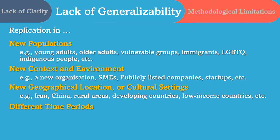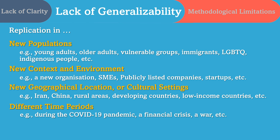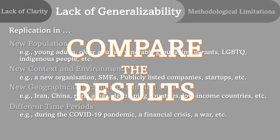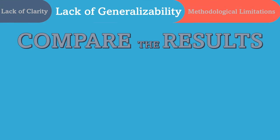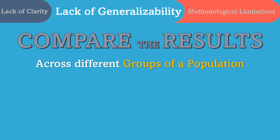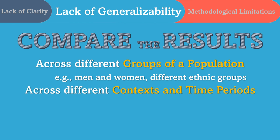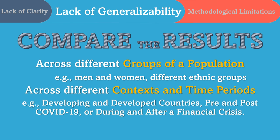Another example can be updating the results of a study or conducting research in different time periods, like during the COVID-19 pandemic, during a financial crisis, or during a war. You can also compare the results across different settings and contexts — for example, comparing across different population groups like men and women or different ethnic groups, or across different time periods like developing and developed countries, or pre- and post-COVID-19 period, or during and after a financial crisis.